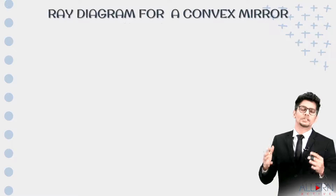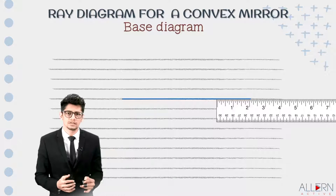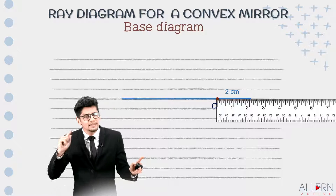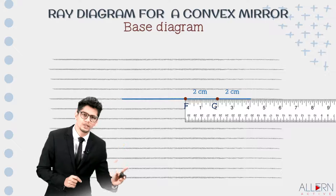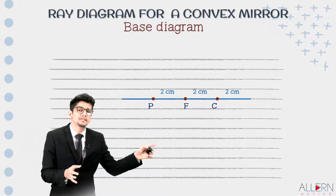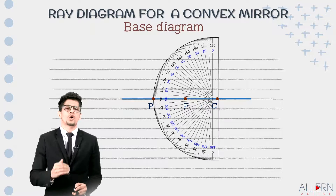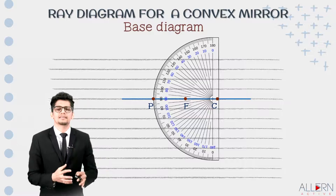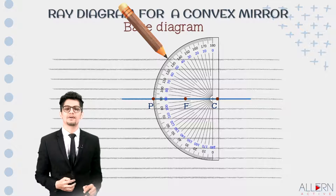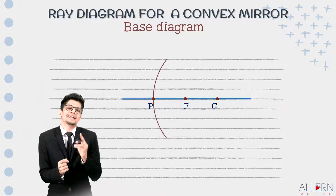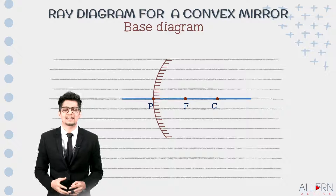Now we learn to draw the base diagram for a convex mirror. First, draw the principal axis. Mark point C two centimeters in, then point F two centimeters further, then point P two centimeters after that. These dimensions are only for understanding. Use a protractor so the 90-degree line coincides with the principal axis, then draw four lines above and four below. Shade it on the inside because this is a convex mirror. This completes the base diagram.